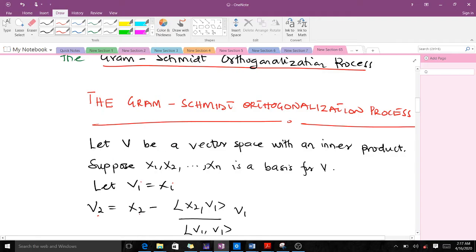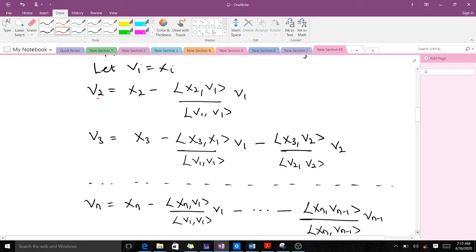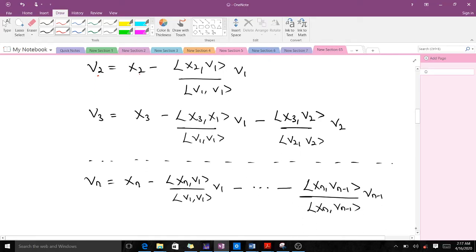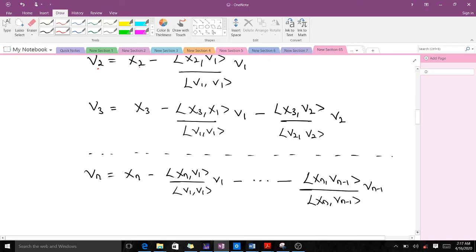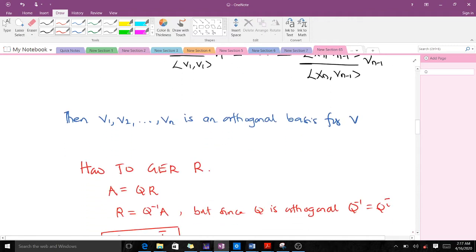Let V be a vector space with an inner product. Suppose these are basis for V. Then we let V1 be X1 and our V2 is equal to X2 minus the inner product of X2, V1, all over the dot product of V1, V1 times V1. And there's a method of finding for V3 up to Vn. Then our V1, V2 up to Vn is an orthogonal basis for V.